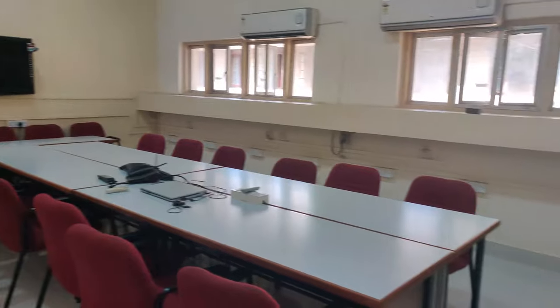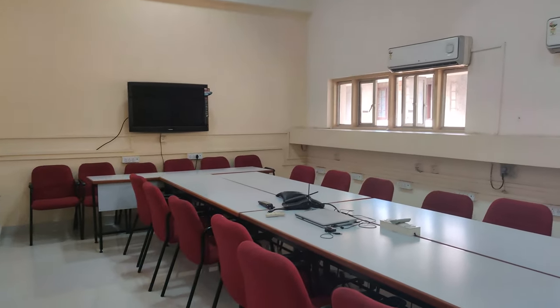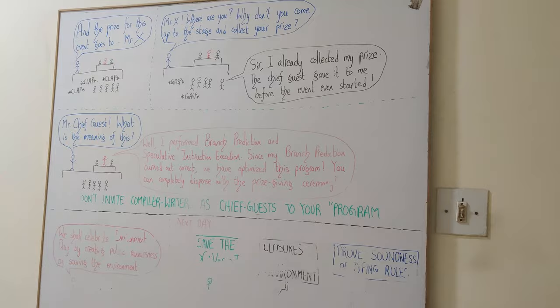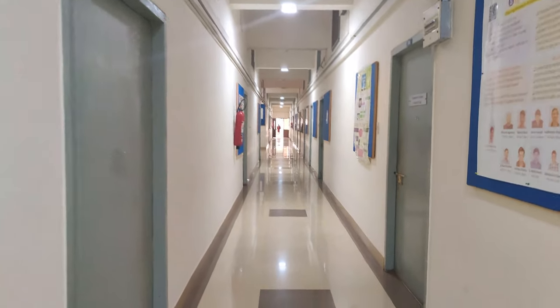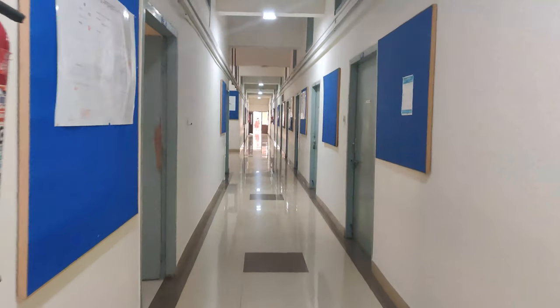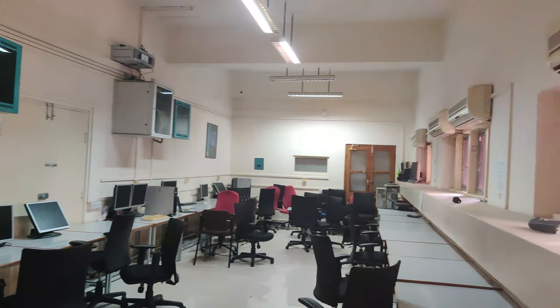This is one of the conference rooms — there are more than five conference rooms in CSA. The ground floor is a bit old, but the second floor is newly constructed, with new doors, cupboards, and interiors. This is another common lab — also air-conditioned — where computation and computer facilities are available for projects and assignments.